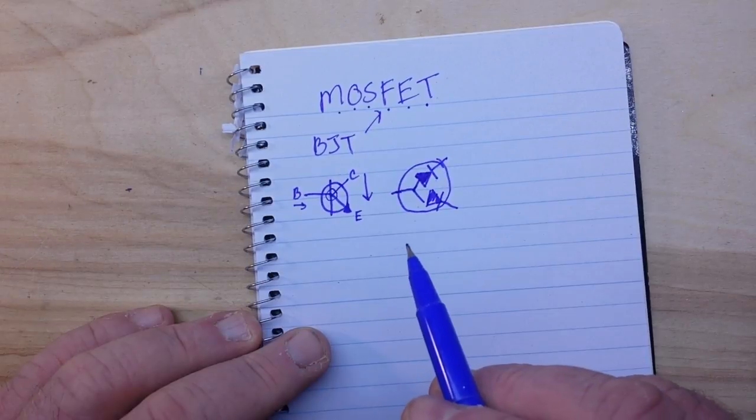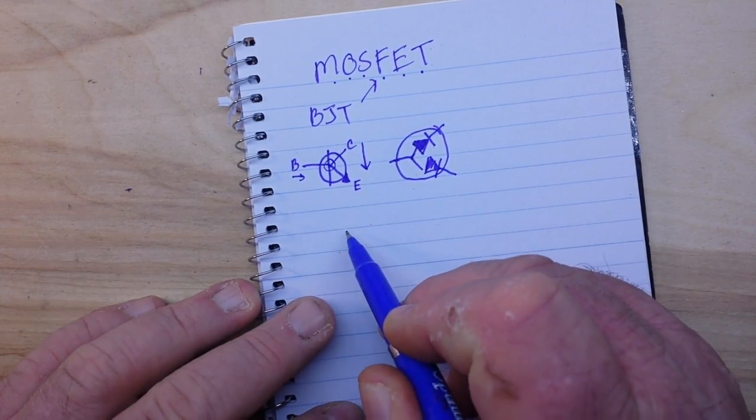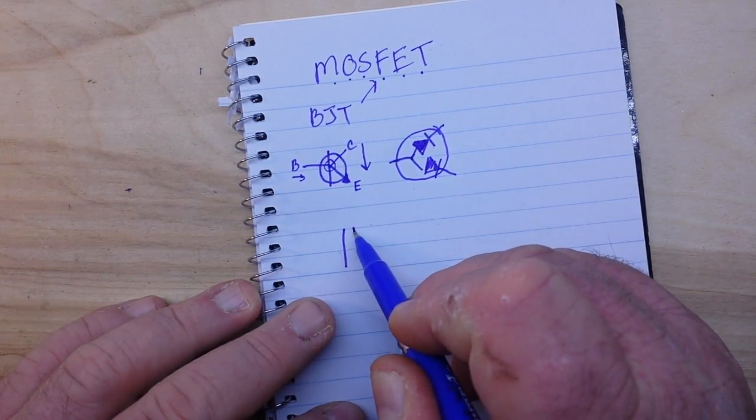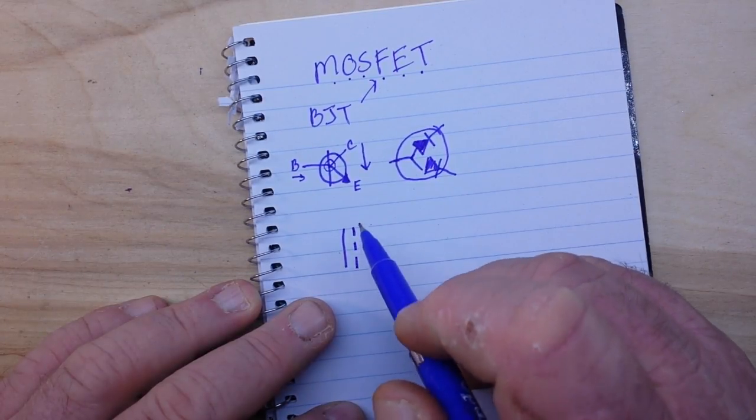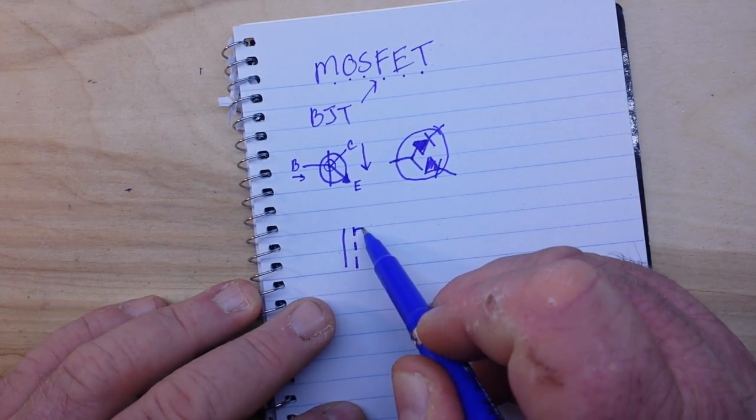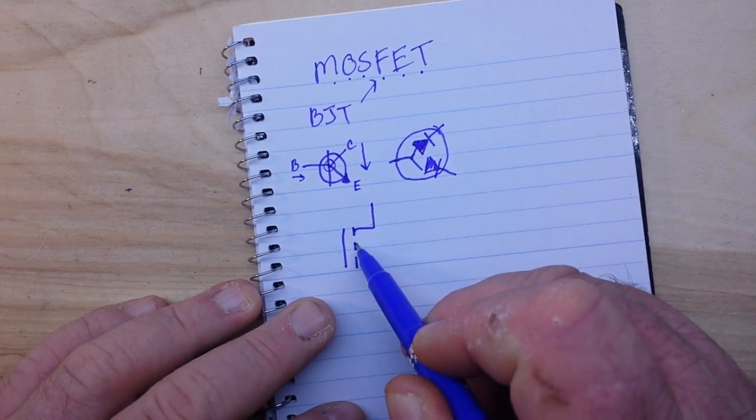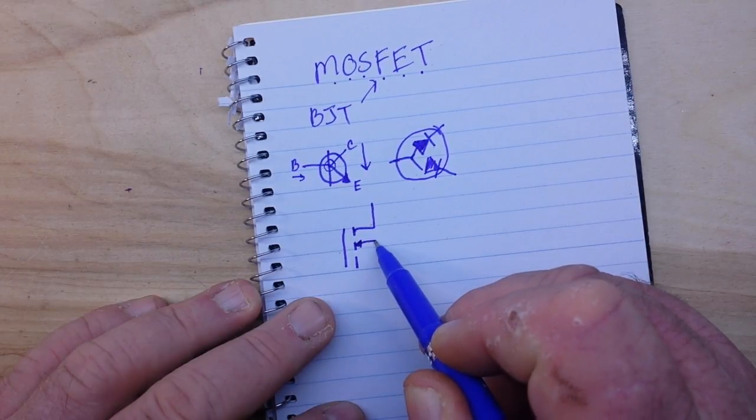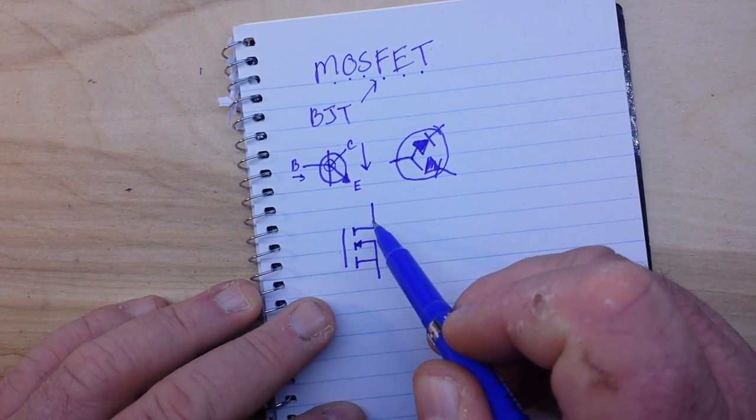You can look at an N channel BJT as a pair of interconnected diodes. Alright, now let's move on to the symbol for our MOSFET. This is an N channel enhancement mode MOSFET, which is the most common and widely used MOSFET and it's used in just about every digital circuit today.